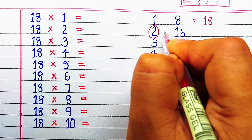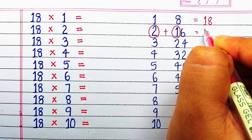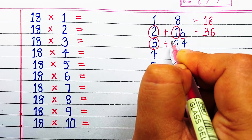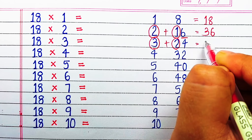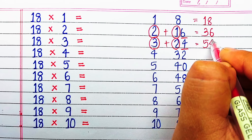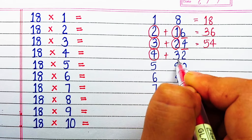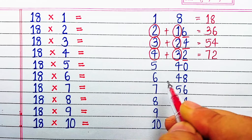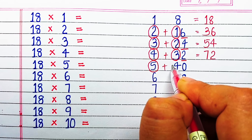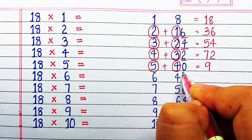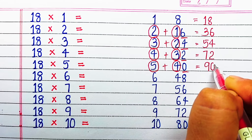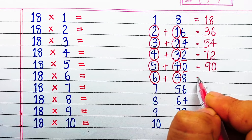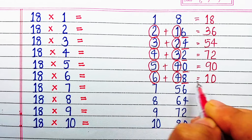So here 1 and 8 make 18. We add the unit digit of the left number with the tens digit of the right number. 2+1=3, then 6, making 36. Then 3+2=5 and we write 4, making 54. Then 4+3=7 and we write 2, making 72. Next 5+4=9 and we write 0 as it is, making 90. Then 6+4=10 and we write 8 as it is, making 108.